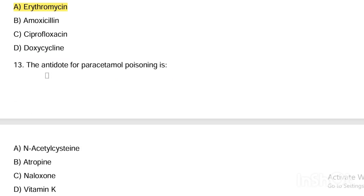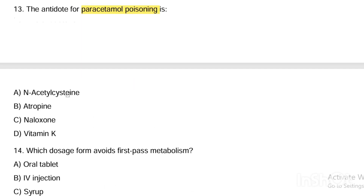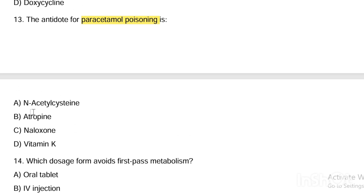Next question. Antidote for paracetamol poisoning is: Option A, N-acetylcysteine. Option B, atropine. Option C, naloxone. Option D, vitamin K. Answer: antidote for paracetamol poisoning is N-acetylcysteine.